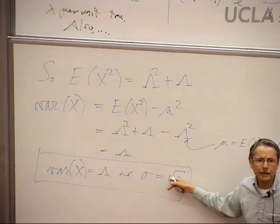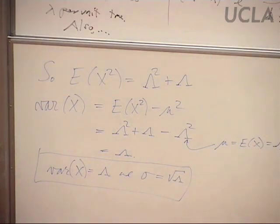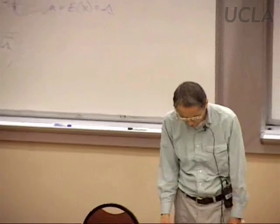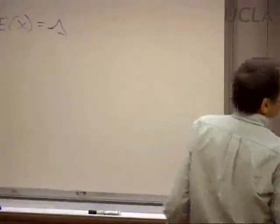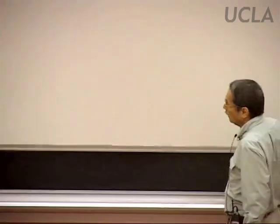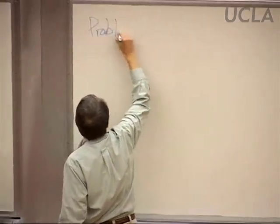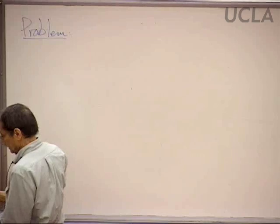The square root is valid: capital lambda is sure to be positive, since little lambda is the rate of hits — it wouldn't make sense for that to be negative — and the time interval must have positive length.